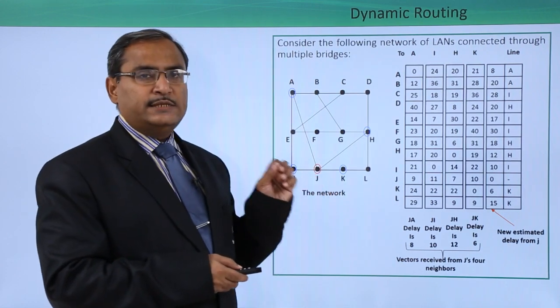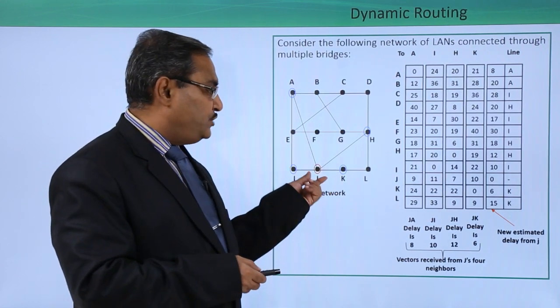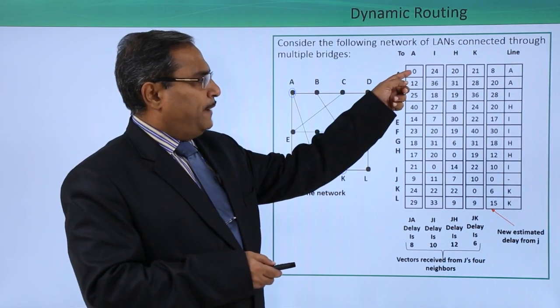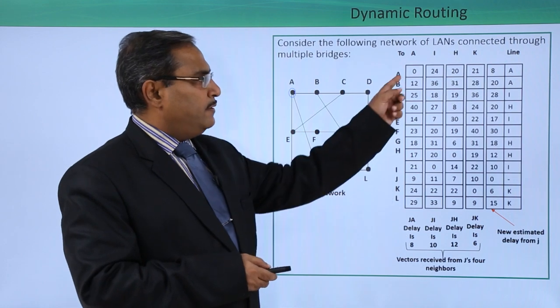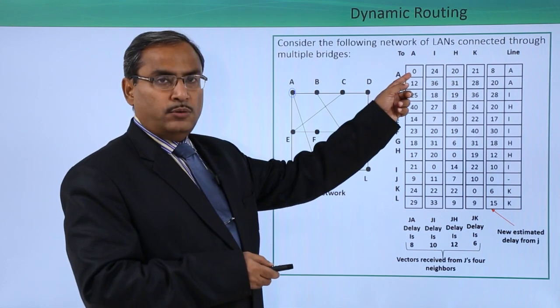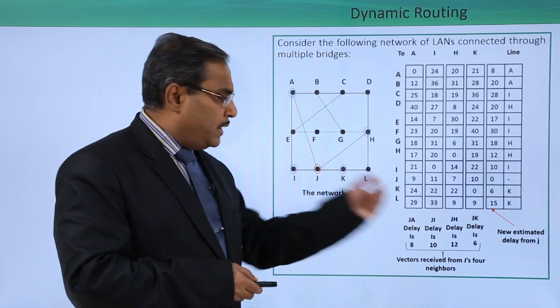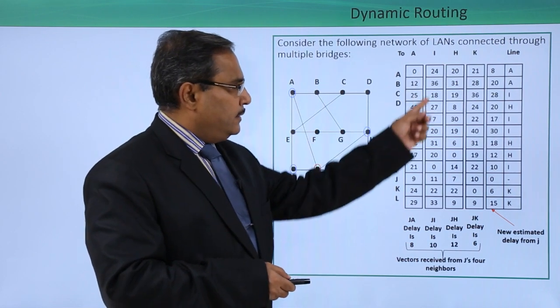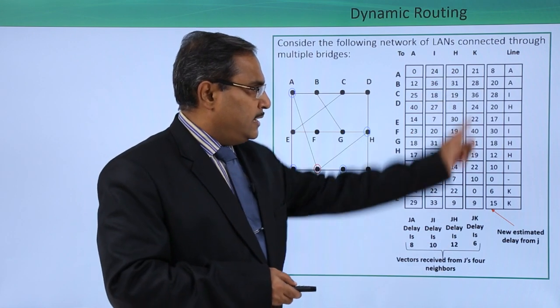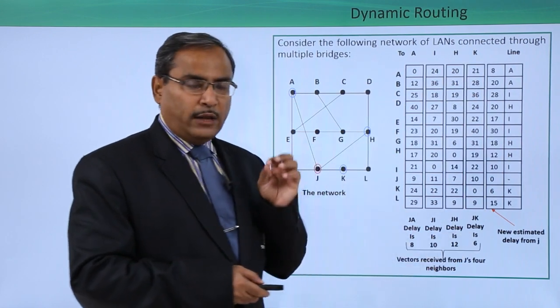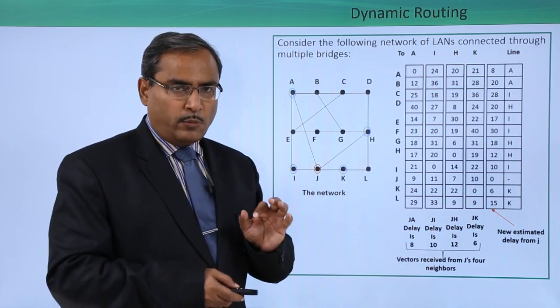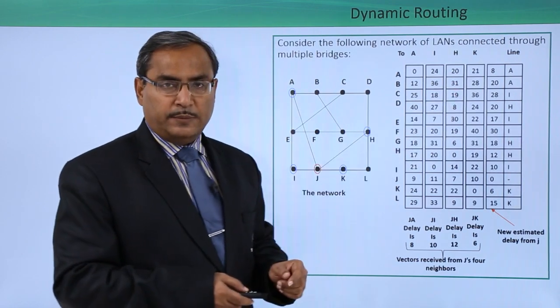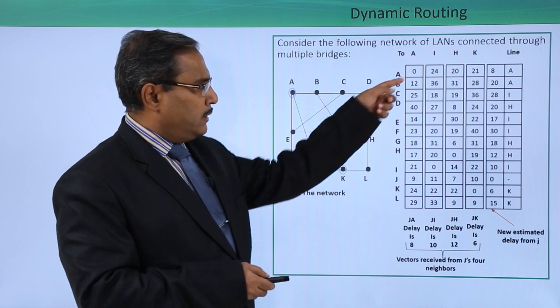Now see how J is forming its routing table. We take this value and this delay - from A to A delay is 0, but to reach from J to A the delay is 8. So this delay plus this delay, then this plus this, and this plus this will be calculated. Then you take the minimum one and write the respective delay and bridge name.